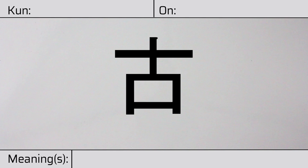Welcome to this lesson on Japanese kanji. Today, we'll be discussing this character. This kanji has a kunyomi, or Japanese reading of furu. And it has an onyomi, or Chinese reading of ko.